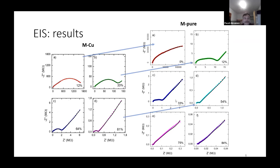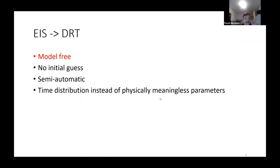We used the distribution of relaxation times (DRT) approach to analyze the impedance spectra. This approach can extract characteristics of an electrical system from impedance measurements. Its main feature is that it is model-free and doesn't require any initial guess about the studied system. It gives the distribution of relaxation times, which has much more physical meaning compared to abstract parameters of equivalent circuits, especially circuits with distributed elements like constant phase elements or Warburg elements.